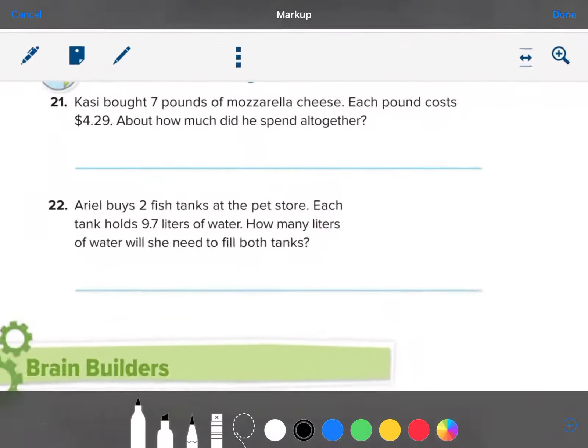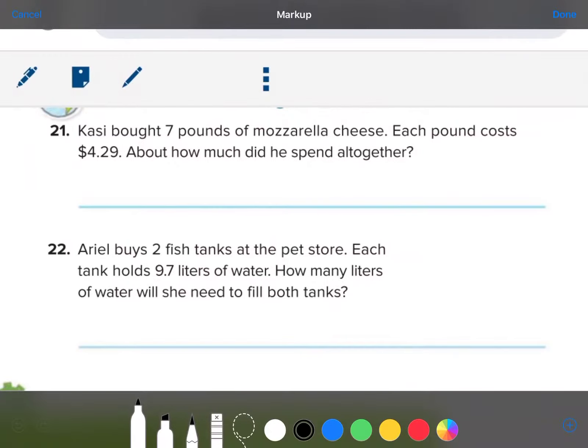Hey, number 21. Keisha bought 7 pounds of mozzarella cheese. Each pound costs $4.29. Ooh. Look what we need right here. About. How much did he spend all together? So, let's go ahead and round this. We have 7 pounds of mozzarella cheese. And, $4.29 is really close to $4. Finish the answer and tell me how much money this person spent.